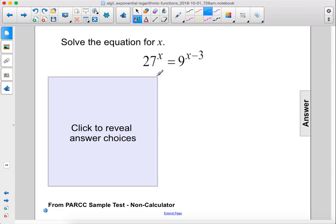Solve the equation for x. 27 to the x power equals 9 to the x minus 3 power.